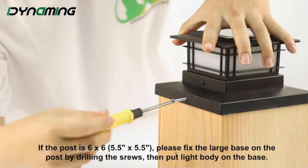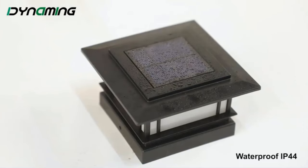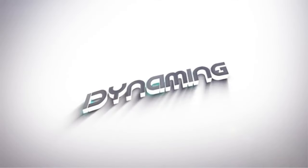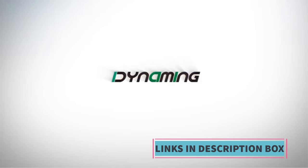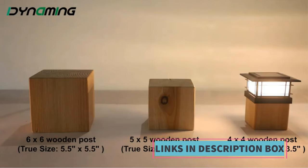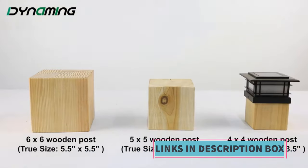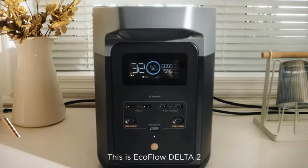The Dynaming 6-Pack is designed to fit various post sizes including 4x4, 5x5, or 6x6 vinyl or wooden posts, providing versatility in installation options. Whether used for enhancing the ambience of a garden, illuminating a deck for evening gatherings, or accentuating a patio area, these lights offer a practical and stylish solution.